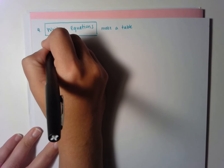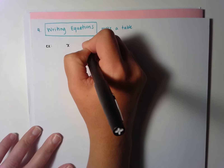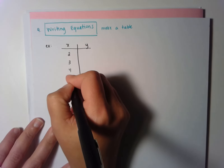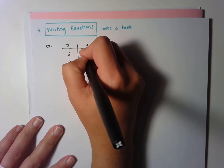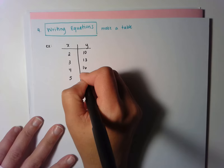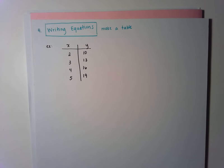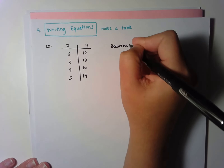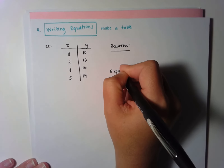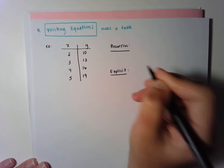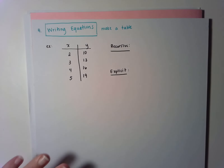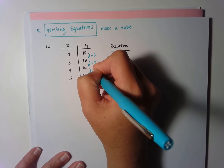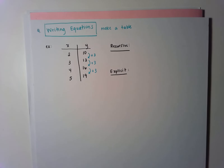The first example is a table with x values 2, 3, 4, 5 and y values 10, 13, 16, 19. I'm going to write both a recursive and an explicit equation. Step one is to find the pattern. The pattern here is plus 3 each time, which tells me this is an arithmetic sequence — if I graphed this, it would be a straight line.